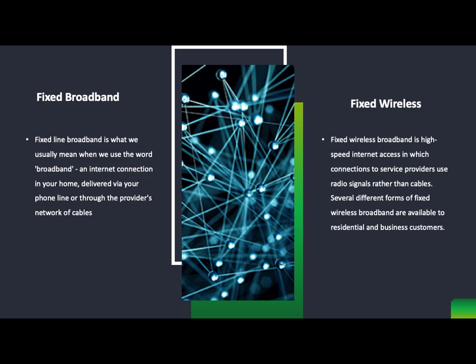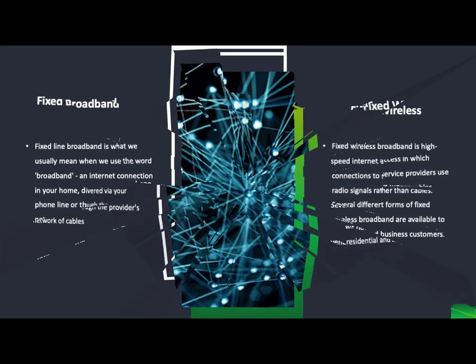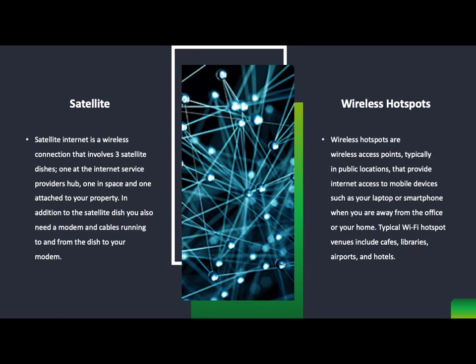Fixed broadband is a fixed line delivering high-speed internet in your home via a phone line or provider's network cable — used solely for the internet. Fixed wireless broadband is similar but is a separate fixed line within a specific business, allowing different devices to attach to it.